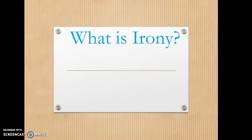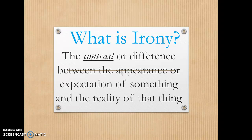In your literary terms section, please write down the following. The first question is: what is irony? The formal definition is it's a contrast or difference between the appearance or expectation of something and the reality of that thing. Simply put, we expect one thing to happen and something else happens instead. That is your generic term for irony.